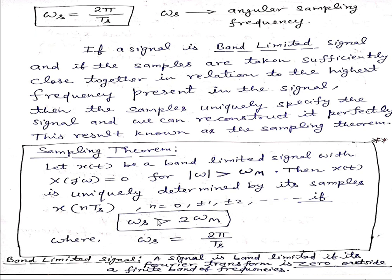So for sampling purpose, omega s, that is the sampling rate, sampling frequency must be greater than twice the frequency of message signal, that is frequency of band-limited signal. So omega s greater than 2 omega m, and where omega s is equal to 2 pi upon Ts. So this is the sampling theorem.